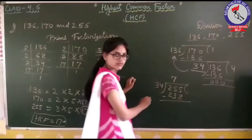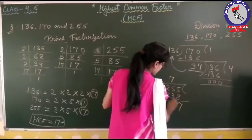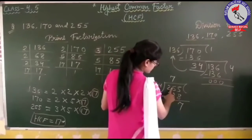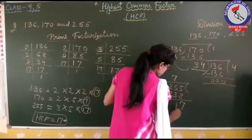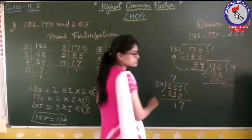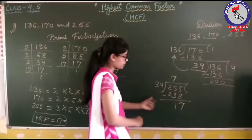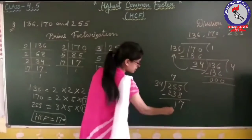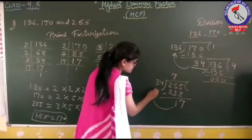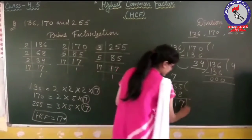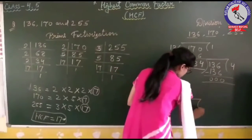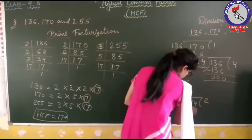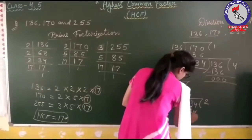Continuing the division steps: 3 minus 8 gives 7, then 4 minus 3 is 1, and 2 minus 2 is 0. Then the result is 7. We continue until 17 equals 34, meaning the last divisor is 17.